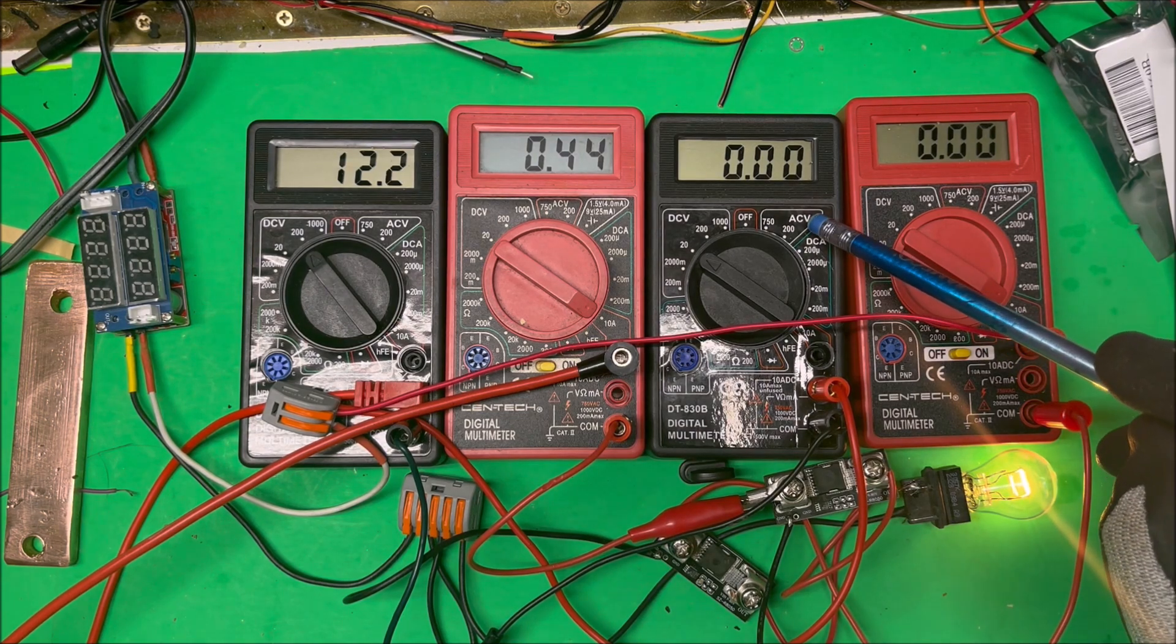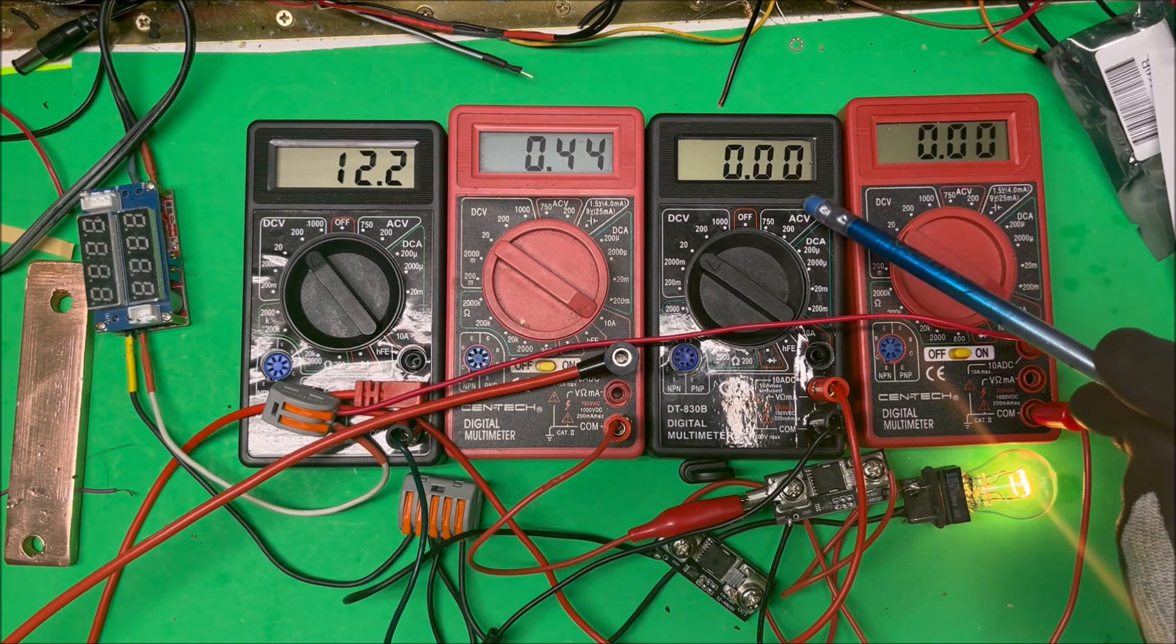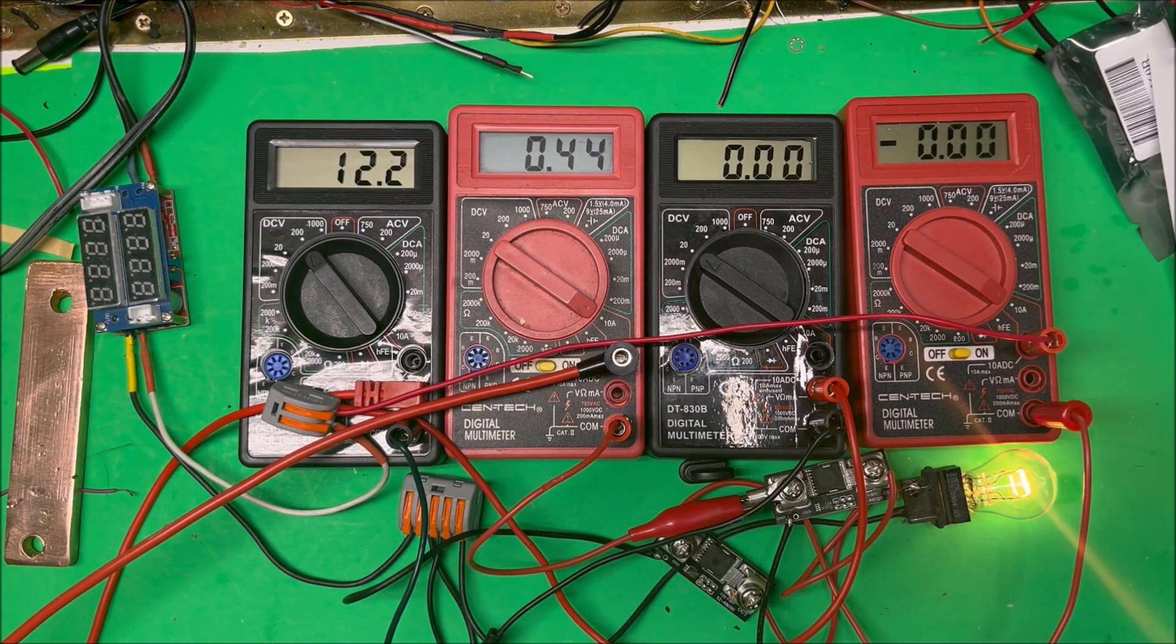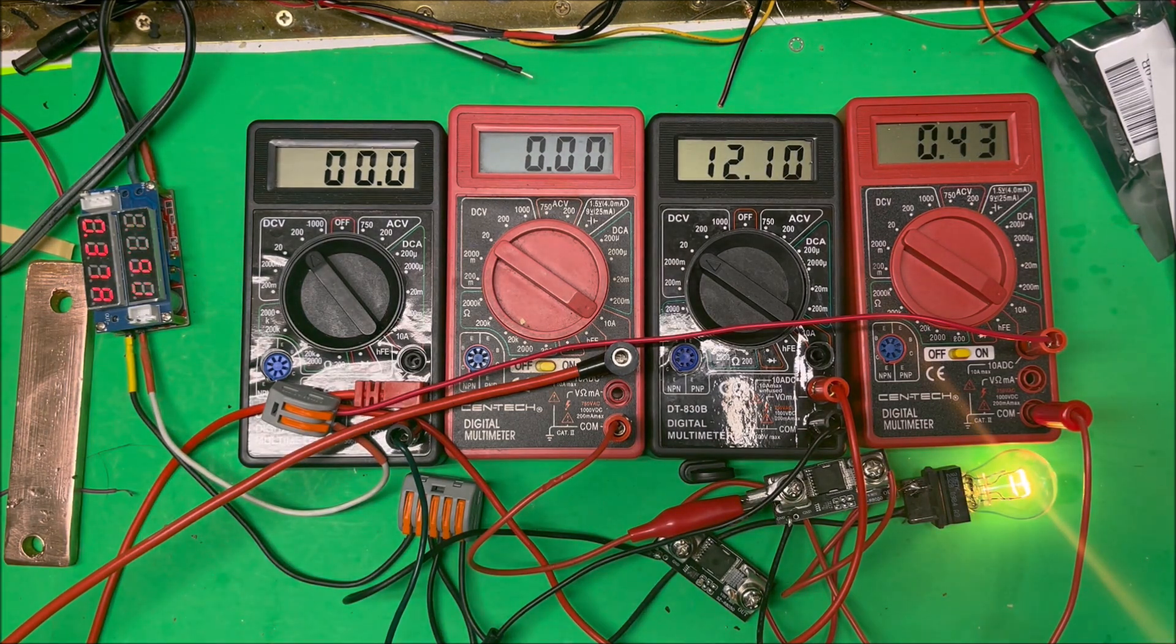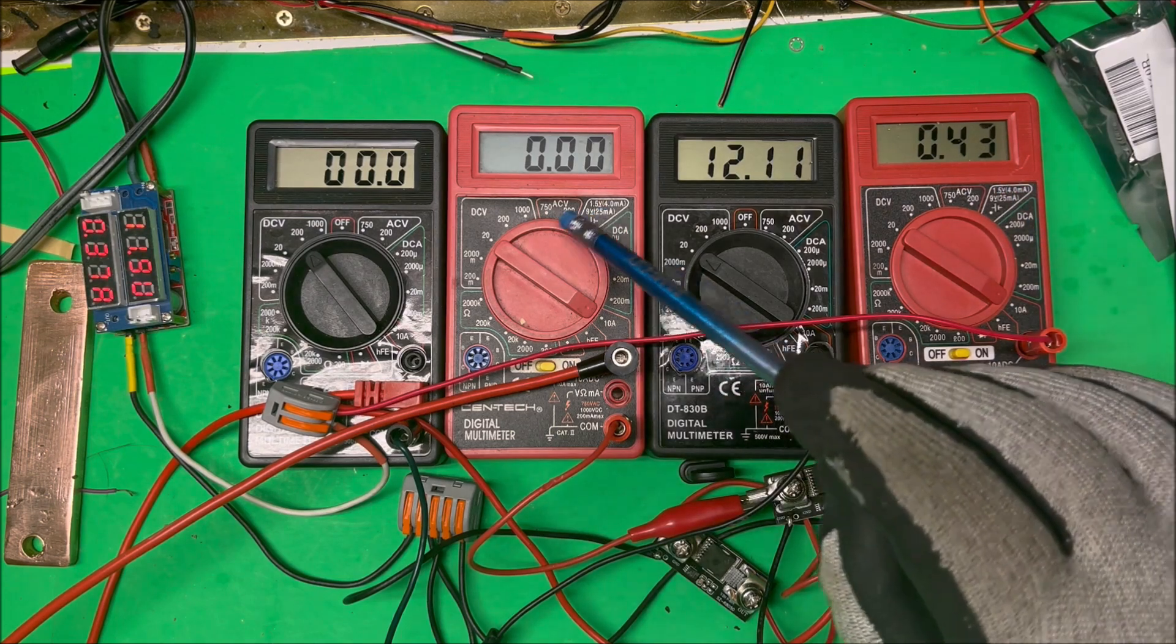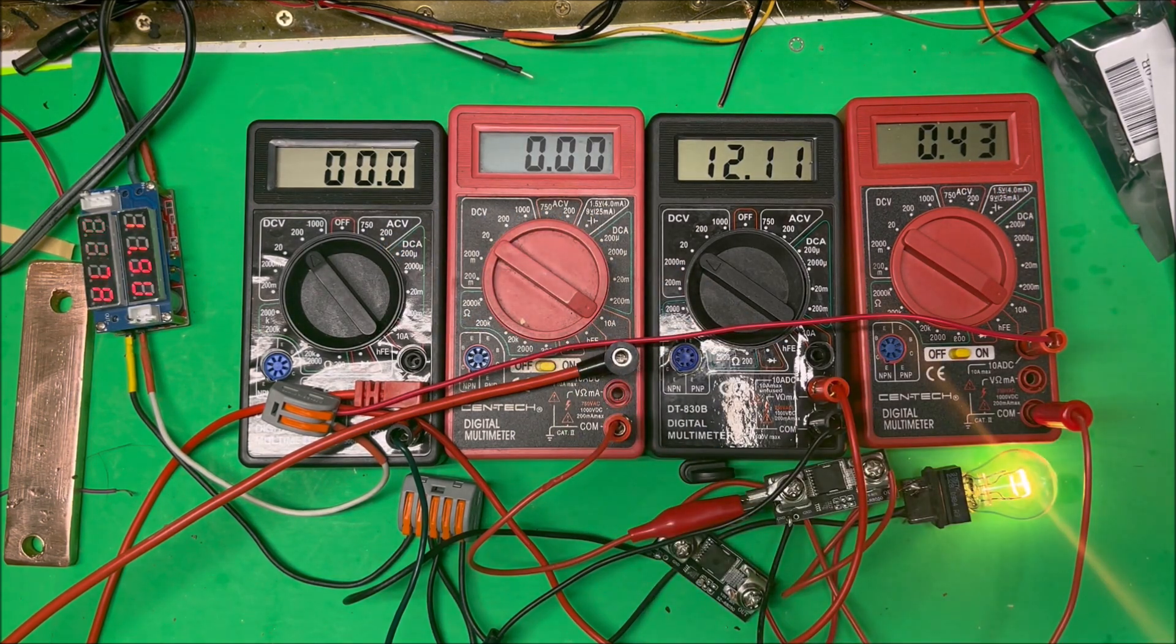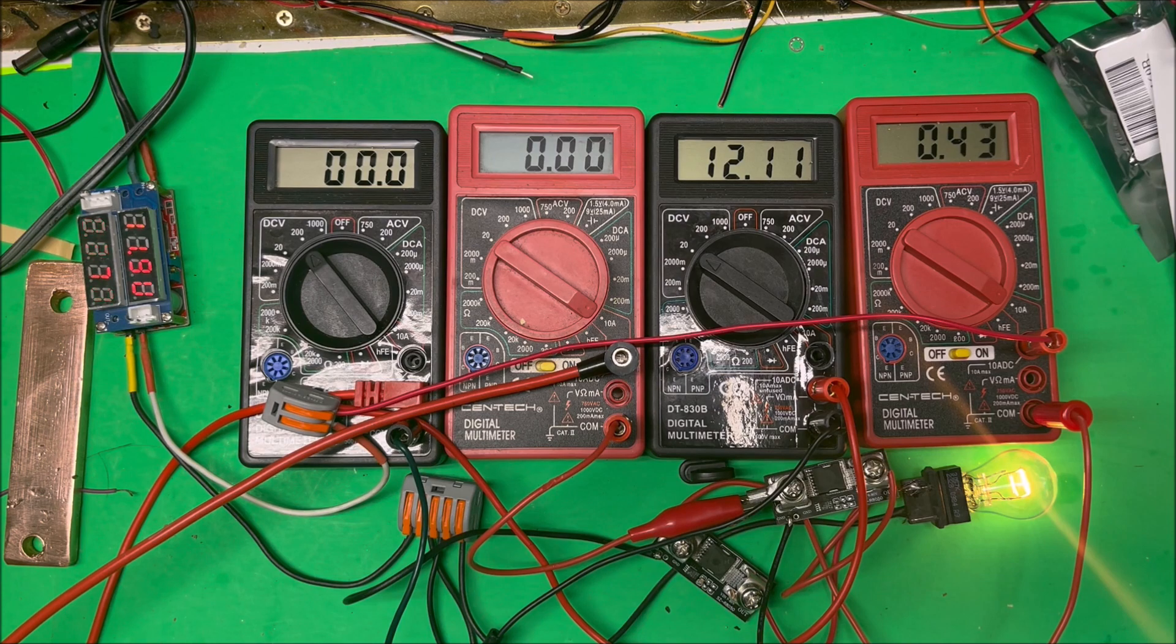There's no voltage coming back and no current coming back through the second diode. Now I'm going to turn that one off and turn this one on, and that works fine too at 12 volts, 0.43 amps and nothing coming back this way. The other diode we had worked the same way.